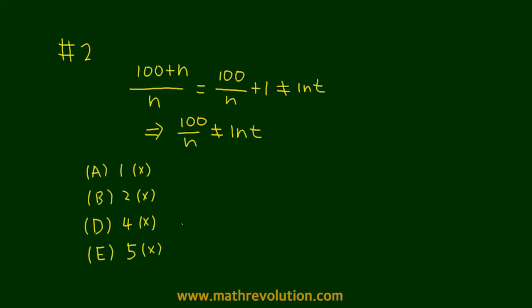So we only have left this choice C, 3, because if n equals 3, 100 divided by 3 is not an integer. So C is the right choice.